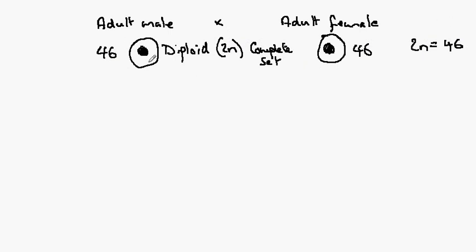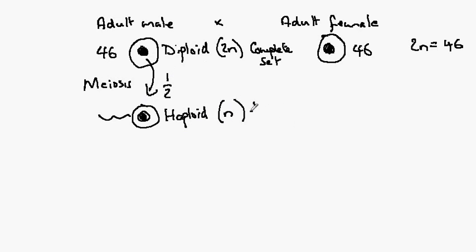Now these cells divide in the testes to produce a half set. These are the gametes in the male, this is the sperm cell. This type of cell division is called meiosis, and the important thing here is to know that this will halve the chromosome number. So we go from a diploid number to a haploid number, which is N, and this is a half set.